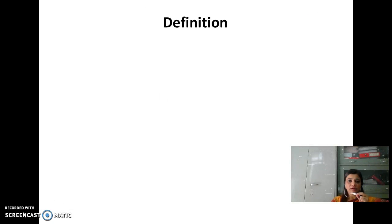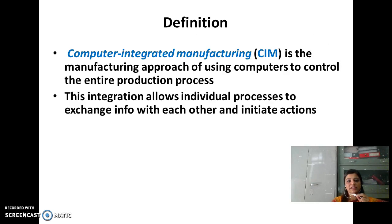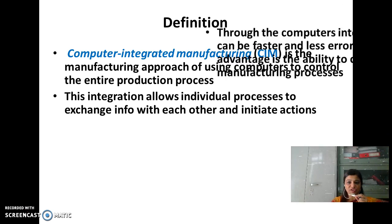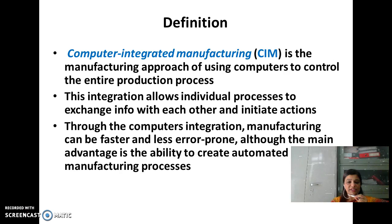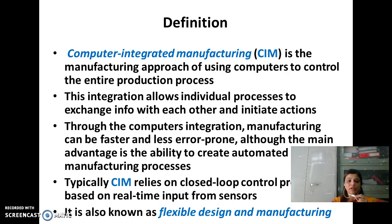Let us see the definition of CIM. Computer Integrated Manufacturing is the approach of using computers to control the entire production process. This integration allows individual processes to exchange information with each other and initiate action. Through computer integration, manufacturing can be faster and less error-prone, although the main advantage is the ability to create automated manufacturing processes. Typically, CIM relies on closed-loop control processes based on real-time inputs from sensors. It is also known as flexible design and manufacturing.